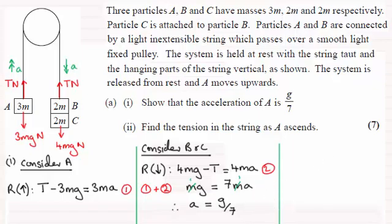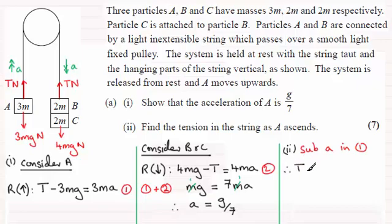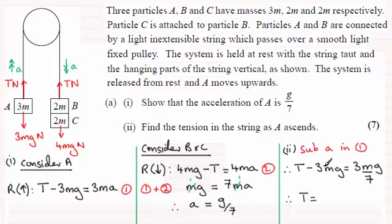Now we just need to find the tension. All we do is substitute our value for the acceleration into equation one. So T minus 3mg equals 3m times g over 7. Rearranging to make T the subject by adding 3mg to both sides: 3mg is 21/7 mg, plus another 3mg gives 24/7 mg. So the tension T equals 24 sevenths mg.